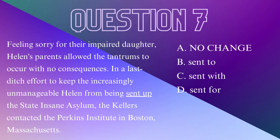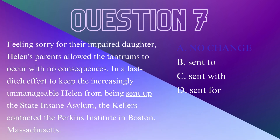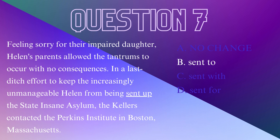Question 7. 'In a last-ditch effort to keep the increasingly unmanageable Helen from being sent up the state insane asylum, the Kellers contacted the Perkins Institute in Boston, Massachusetts.' You should be able to hear that it's written incorrectly. Did they try to keep Helen from being sent to, with, or for the state asylum? The correct choice is B — sent to the asylum.